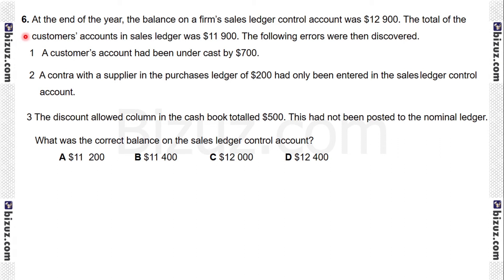Question six. Let's see the requirement first. The requirement is: what was the correct balance on the sales ledger control account? We have to calculate the correct balance. That means there are already some values in the sales ledger control account and there are some errors, so we have to adjust these errors with the given figures.